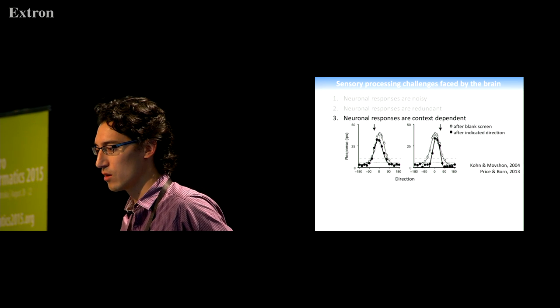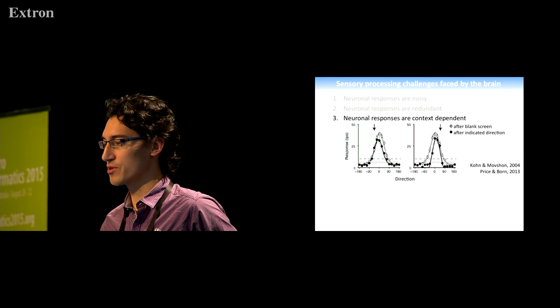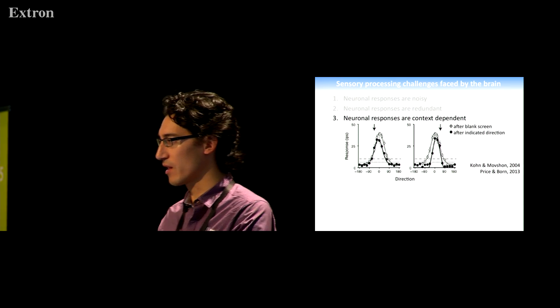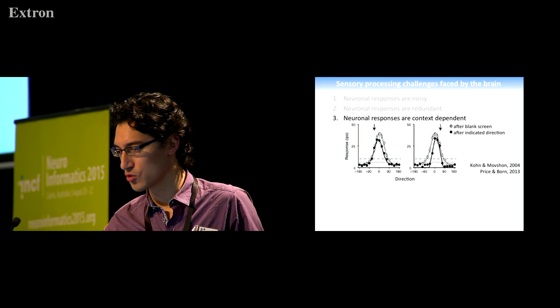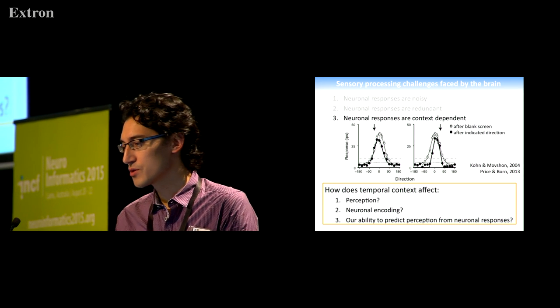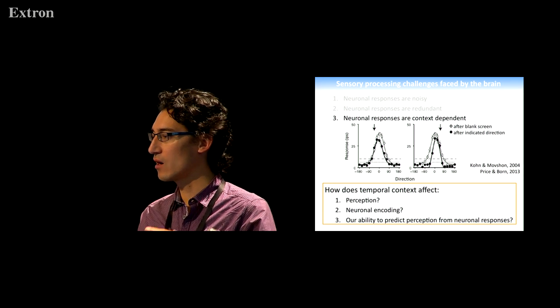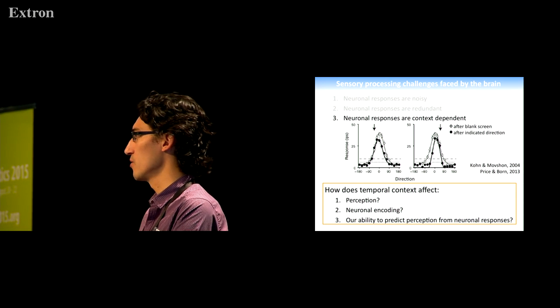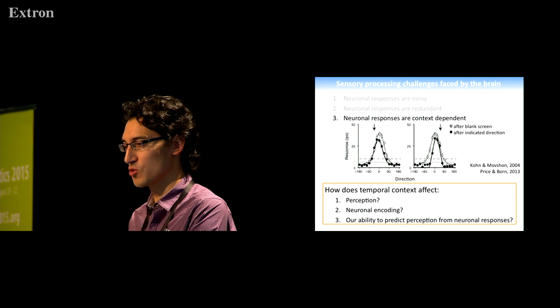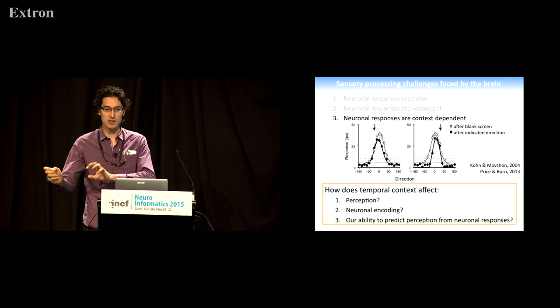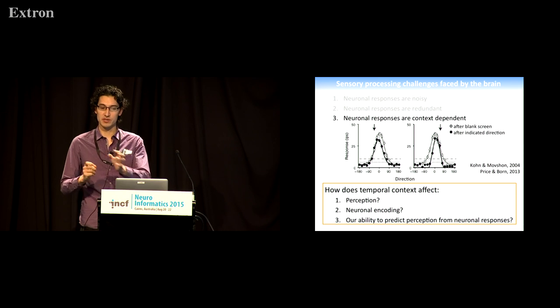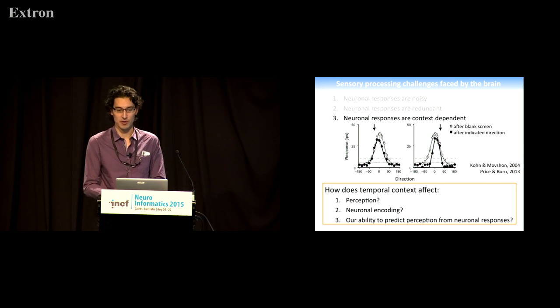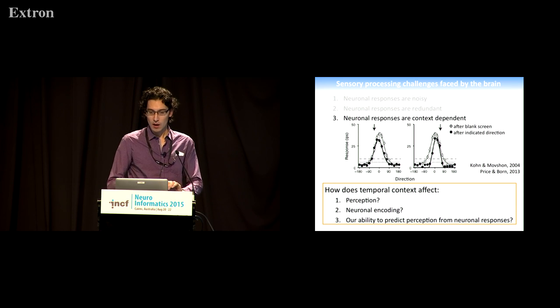A neuron's tuning curve is not immutable. People have described this kind of thing before; what's particularly novel about our approach is that we're recording simultaneously from a true neuronal population and relating that to perception in humans. In my talk, I'm going to look at how temporal context affects firstly human perception, then the encoding of neuronal responses in a non-human primate model, and then link the two to see how well we can predict perception and perceptual errors from neuronal responses.